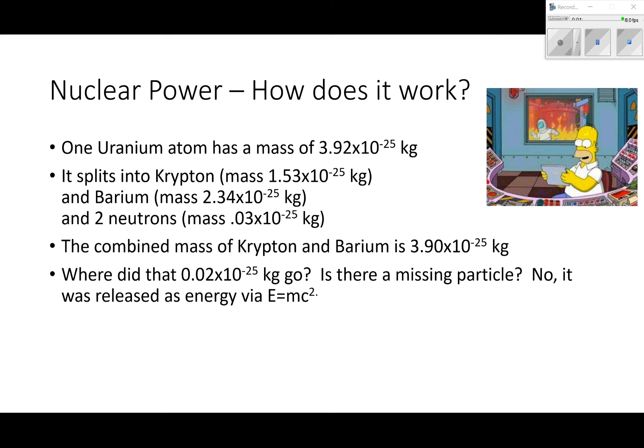So nuclear power, how does it work? I know there's a lot of numbers there, but there's nothing too complicated here. One uranium atom has a mass of 3.92 times 10 to the minus 25 kilograms. And we split it into krypton and barium and two neutrons.